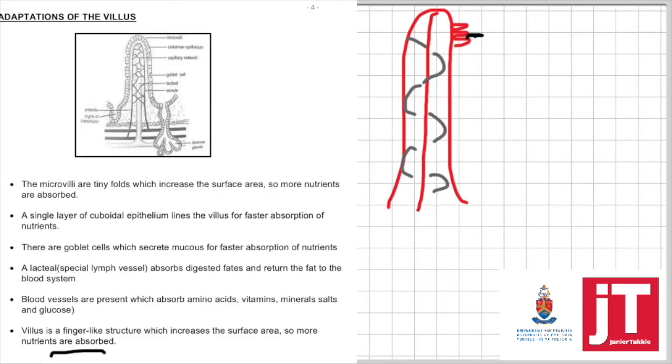On the villus is a single layer of cuboidal epithelium and the single layer will allow for faster absorption of nutrients.